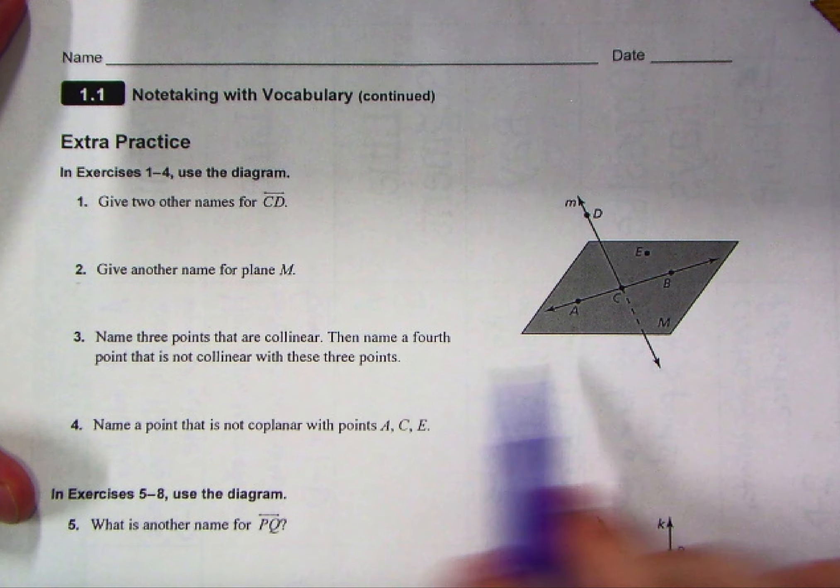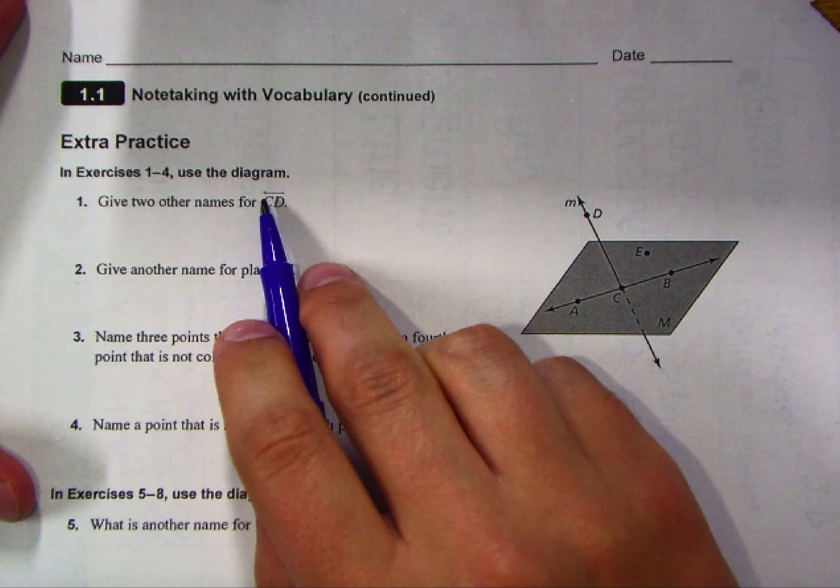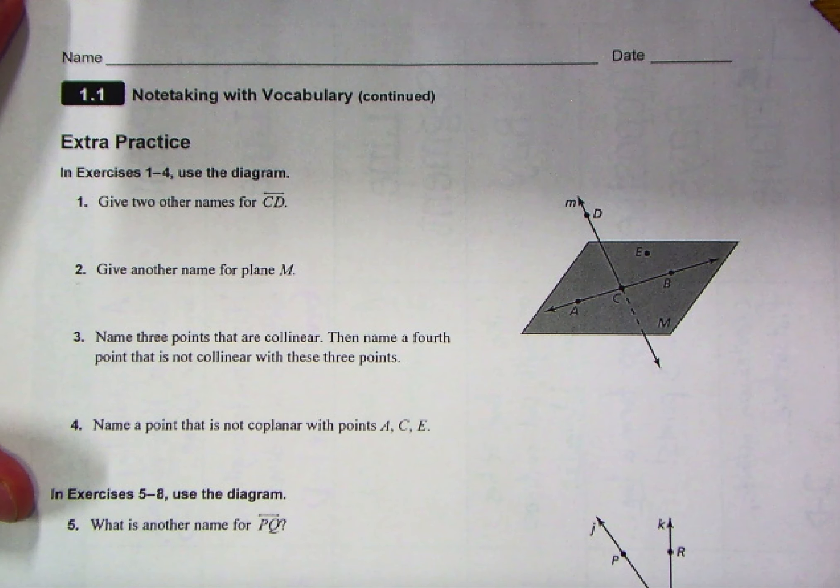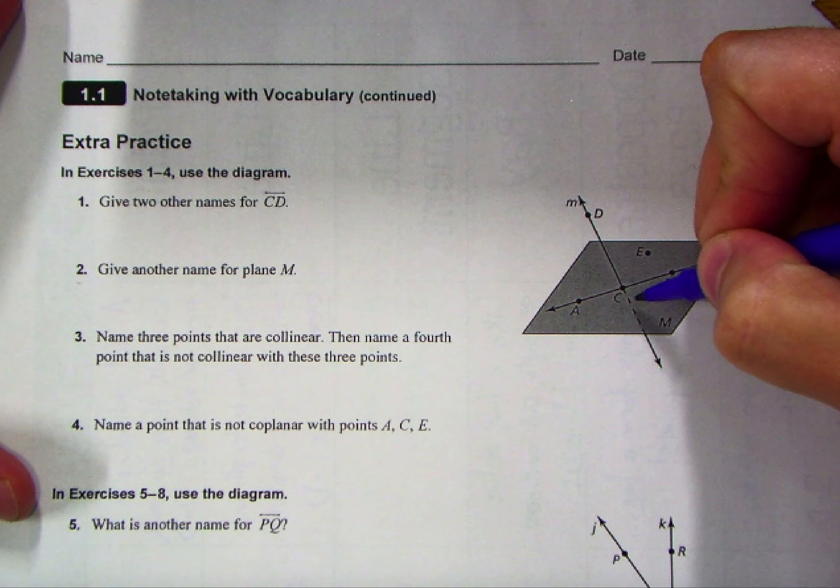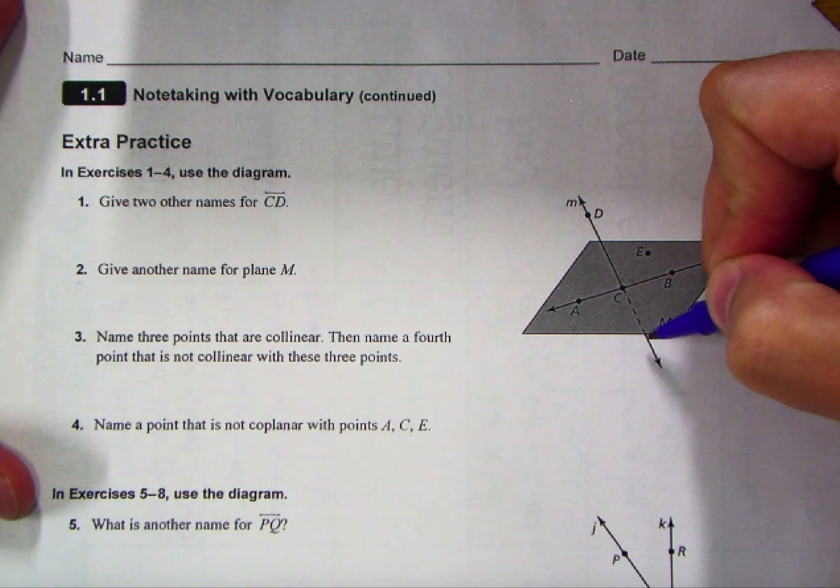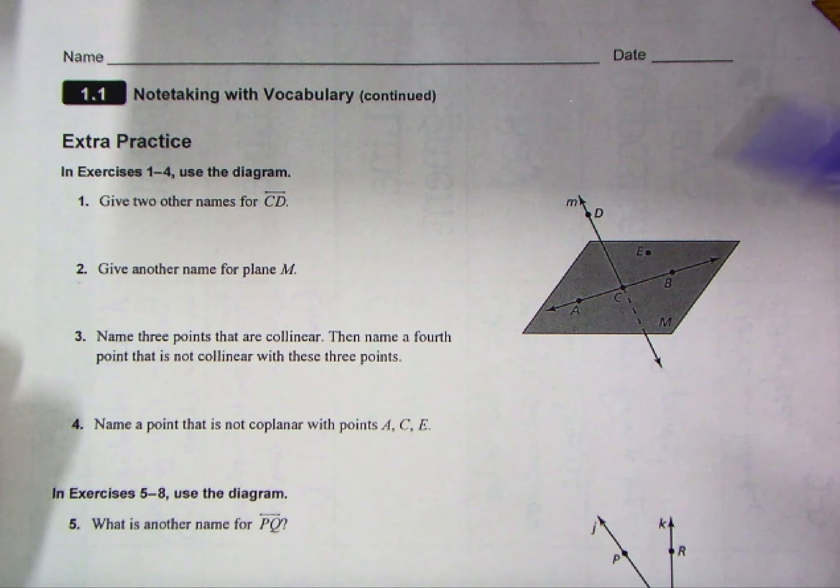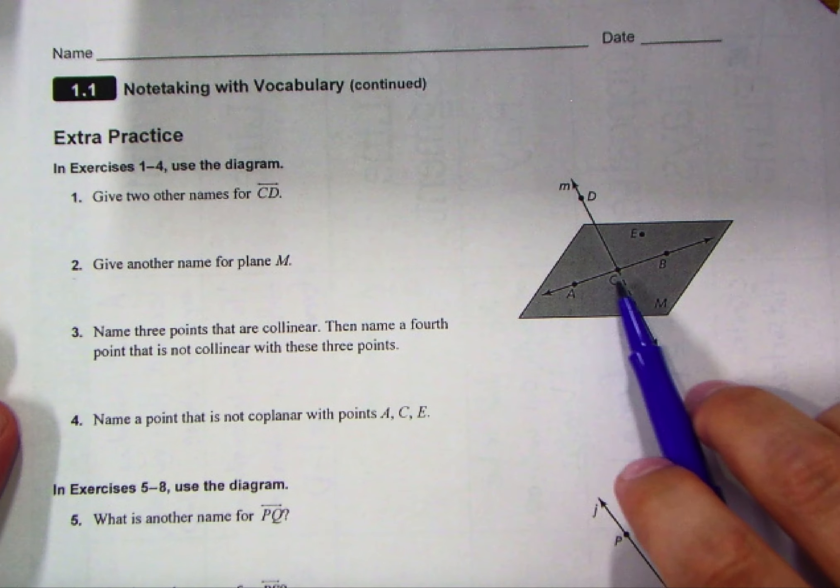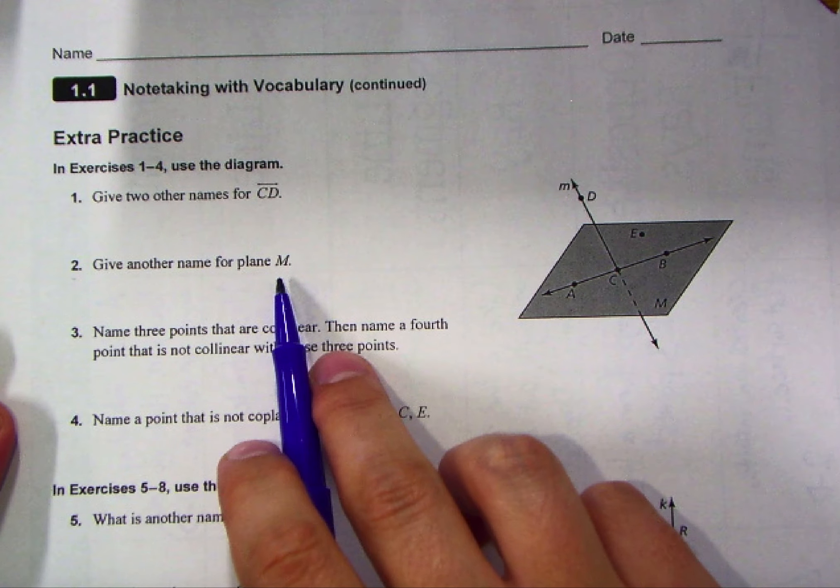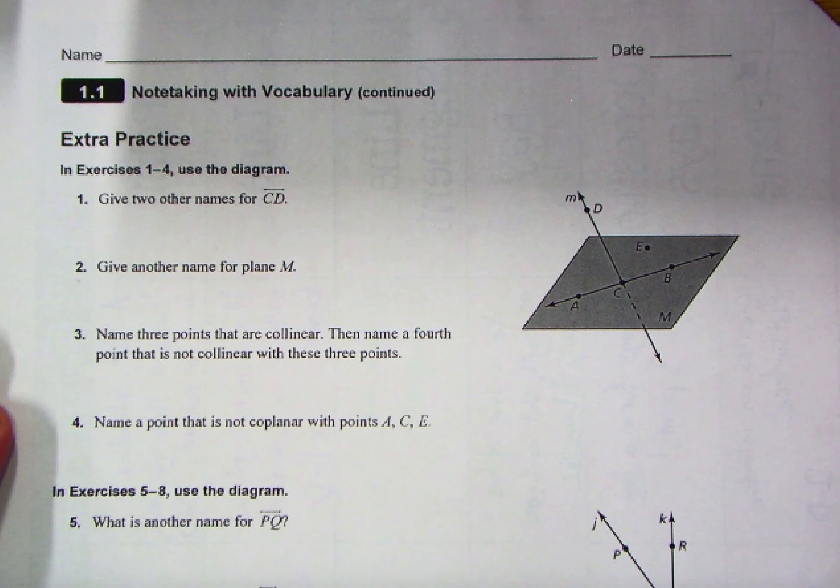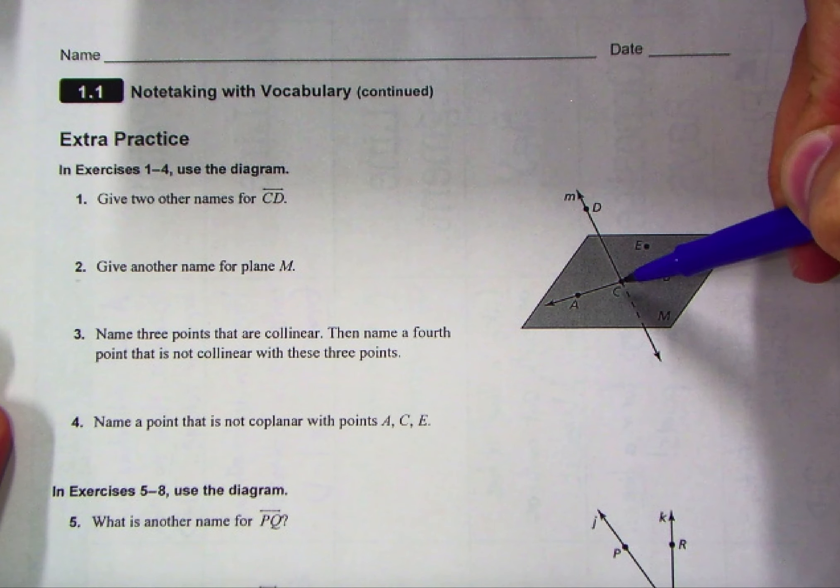We're going to be using this diagram for numbers 1 through 4 and it says to give two other names for line CD. We know that's line CD because there are arrowheads on either end of that symbol. So we're talking about CD and the line passing through them. Let's recap on what this dotted section means one more time - that just indicates that it's actually behind something. Something's covering up our view of what we see here. That would indicate that the line itself is underneath this shaded region, the plane with a little M in the corner, plane M. So what that tells us is if it passes underneath there, then this must be the point of intersection.